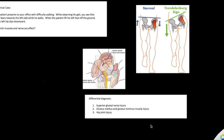In this case, the left hip dips downward. So the muscles and nerve on the opposite side are the ones that are injured. Since it's the left hip dipping downward, the nerve that is injured is on the right side. So it's the right superior gluteal nerve that is injured, which leads to weakness in the right gluteus medius and the right gluteus minimus.